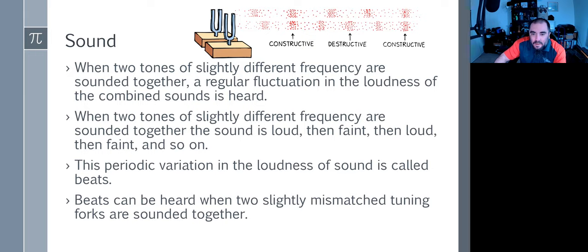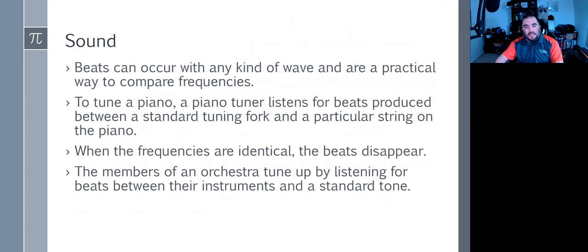When two waves of slightly different frequency are sounded together, a regular fluctuation in the loudness of the combined sound is heard. When two tones of slightly different frequency are sounded together, the sound is loud and faint and loud and faint. The periodic variation in loudness is known as the beat. Beats can be heard when two slightly mismatched tuning forks are sounded together. To tune a piano, a piano tuner listens for beats produced between a tuning fork and a particular string. When the frequencies are identical, the beat disappears. Members of an orchestra tune up by listening for beats between their instruments and a standard tone.